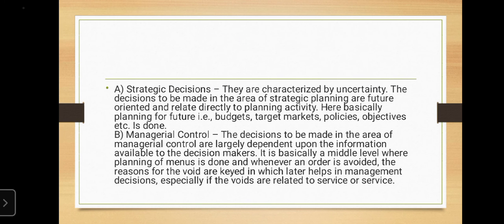Second, managerial control decisions largely depend upon the information available to the decision makers. It is a middle level where planning of resources is done. Whenever an order is voided, the reasons for the void are keyed in, which later helps in management decisions, especially if the voids are related to food or service.